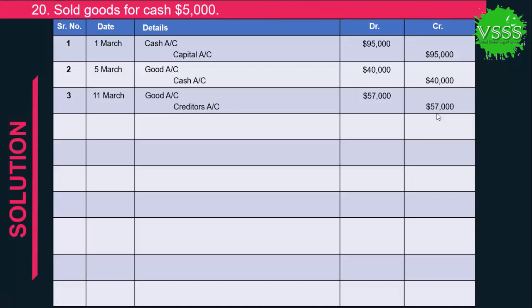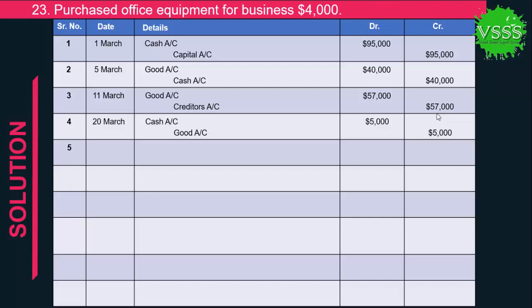Transaction 4: Sold goods for cash $5,000. This transaction affects two accounts: cash and goods. Cash account is debited by $5,000 and the goods account is credited by $5,000.